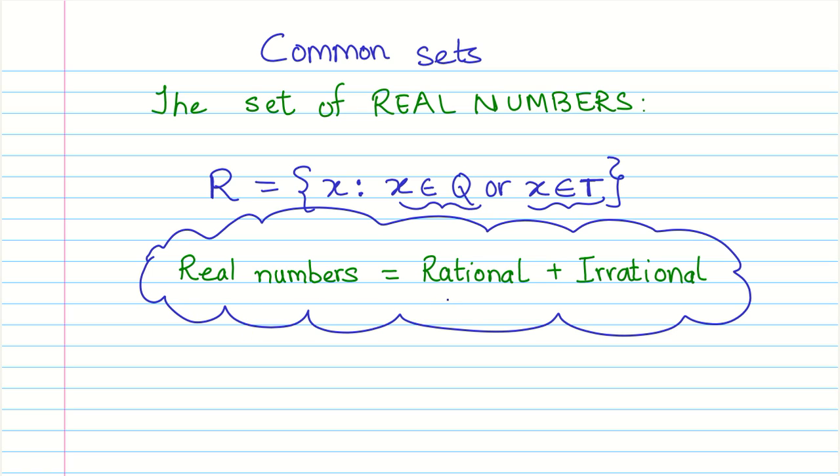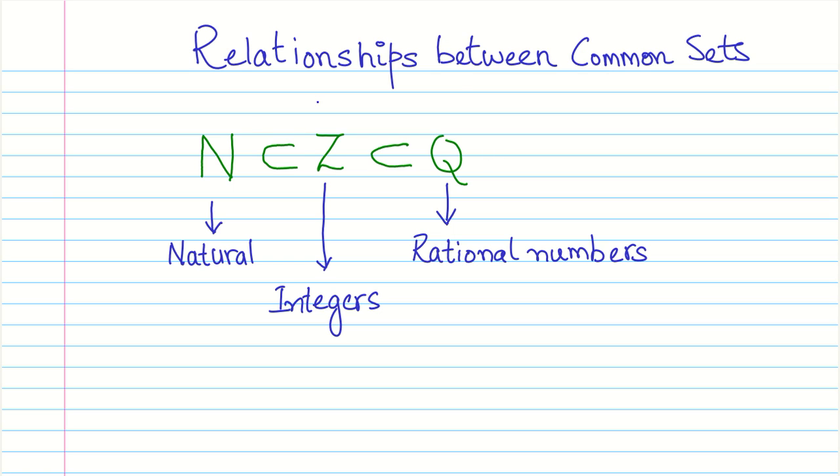Now let us look at some relationships between the common sets. The natural numbers are a subset of integers, which is intuitive because natural numbers start from one, two, three, four, and so on. When we add zero and negative numbers, we get integers. So N is a subset of integers, and integers are a subset of rational numbers.